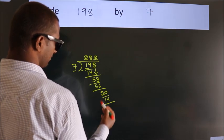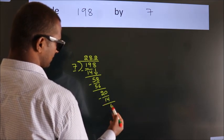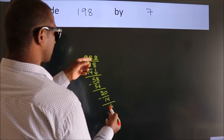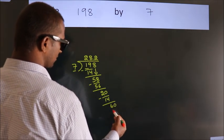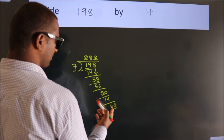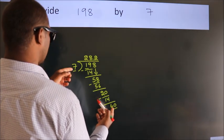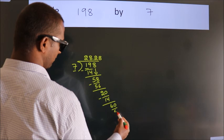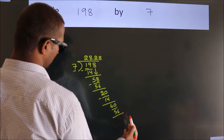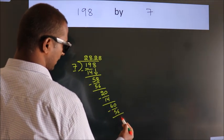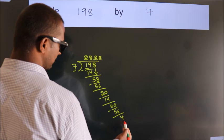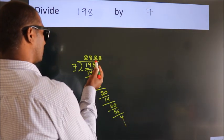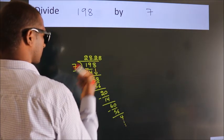Now we subtract and get 6. After this, we already have the decimal, so directly take 0, so 60. A number close to 60 in the 7 table is 7×8=56. Now we subtract and get 4, and the division continues. It is enough if we do up to two decimal places.